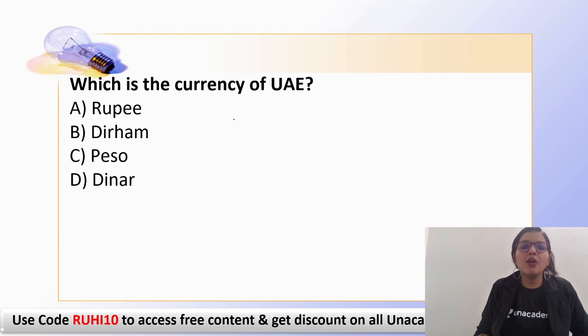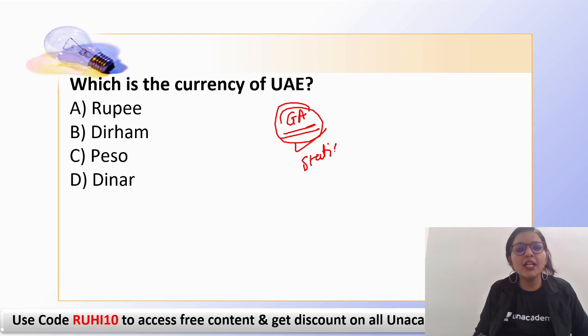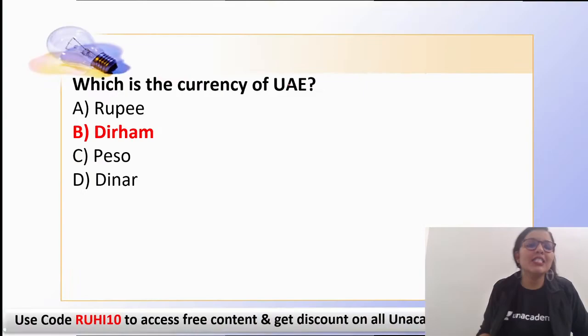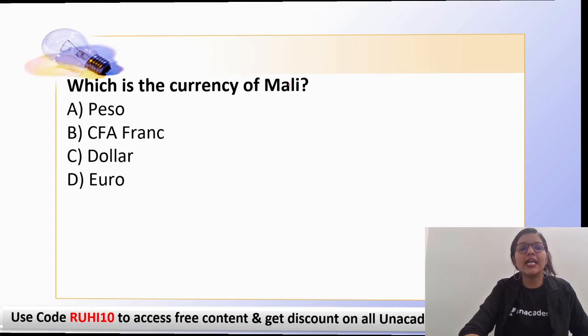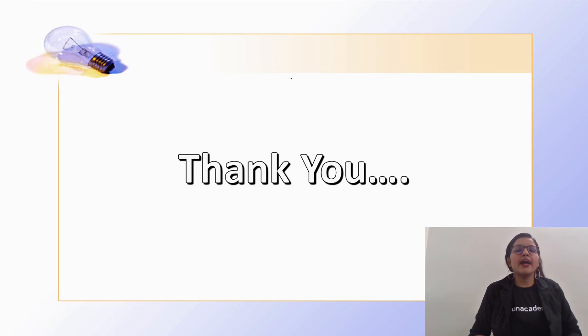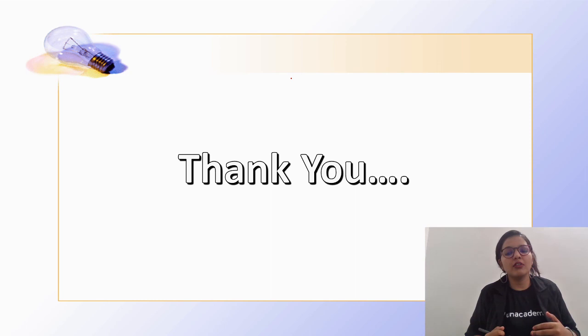Now for some static GK questions. In any examination, static questions on capitals, currencies, dams, and reserves are very common. The currency of UAE is the Dirham. The headquarters of DRDO is in New Delhi. The currency of Mali is the CFA Franc. These are the static facts connected with the current affairs topics covered today.